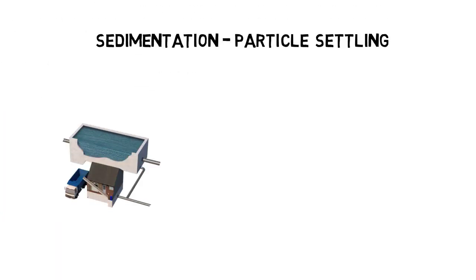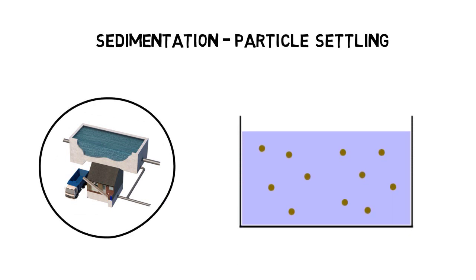Afterwards, smaller particles that couldn't be caught by the screens are clumped together using coagulation and flocculation to form bigger particles.